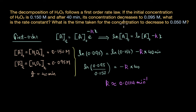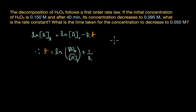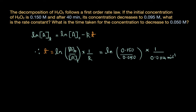Now, to figure out the time taken for the concentration to decrease to 0.050 molar, we know the value of k and the values of A_t and A₀. Using the integrated rate equation rearranged to t = ln(A₀ / A_t) × (1/k), where A_t = 0.050 molar and A₀ = 0.150 molar, and substituting and solving, we get t ≈ 96.4 minutes. So it takes about 96.4 minutes for the concentration of hydrogen peroxide to decrease to 0.050 molar.